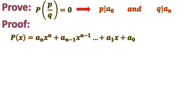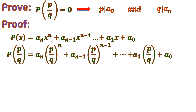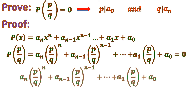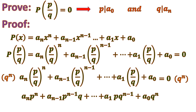We start with the general polynomial: aₙxⁿ + aₙ₋₁xⁿ⁻¹ + … + a₀. We replace x with p/q, setting the expression equal to zero since p/q is a root. Then we multiply both sides by qⁿ to eliminate all fractions. Distributing qⁿ cancels the denominators term by term.